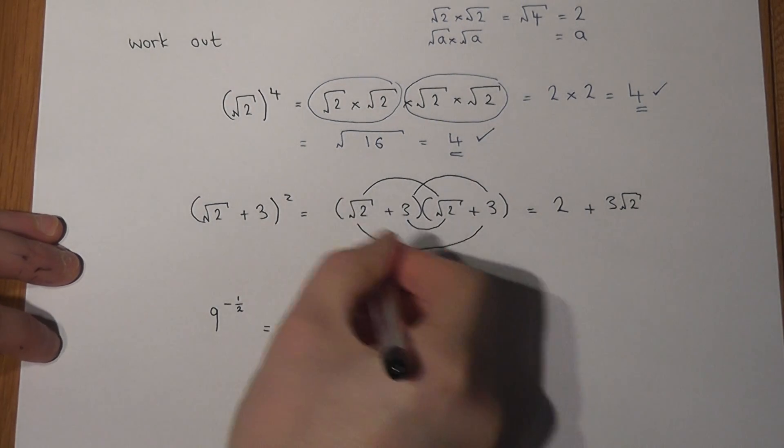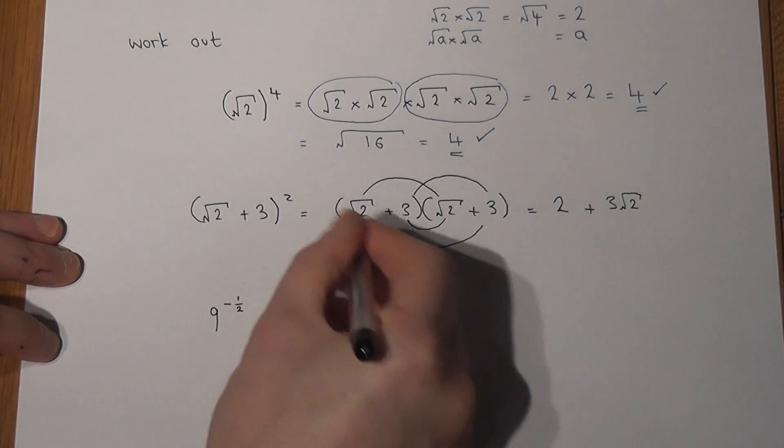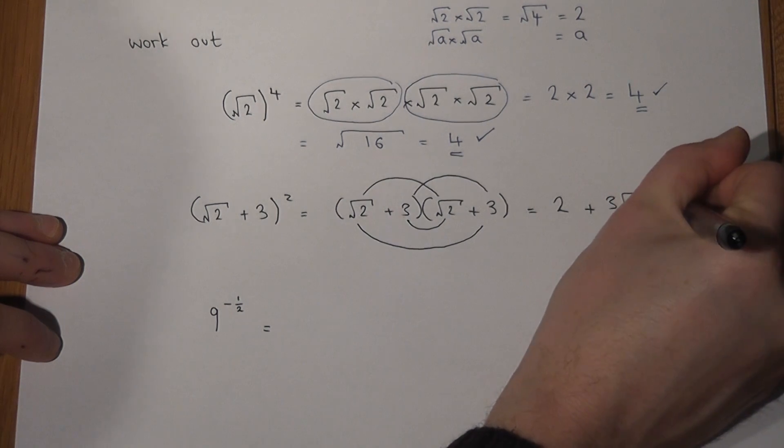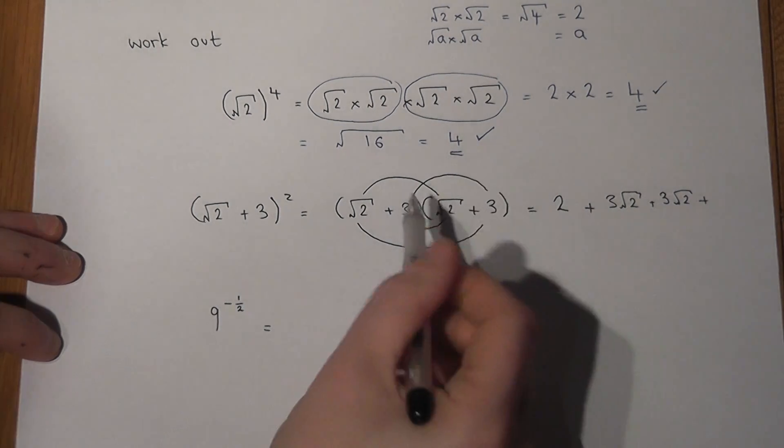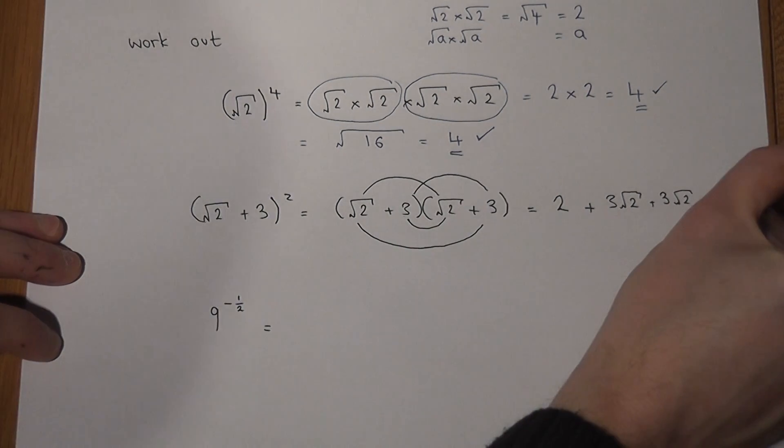Again, this bit here also is 3 lots of root 2. Then, last but not least, remember we're multiplying here and adding. 3 times 3 equals 9.